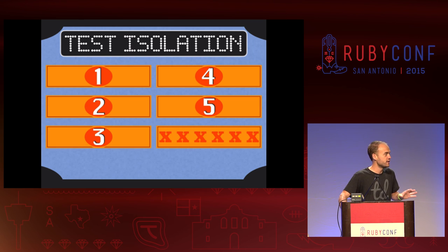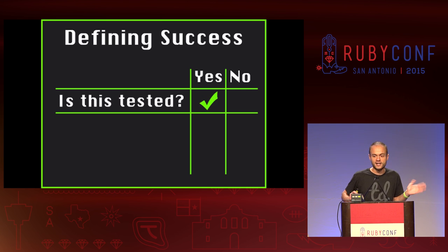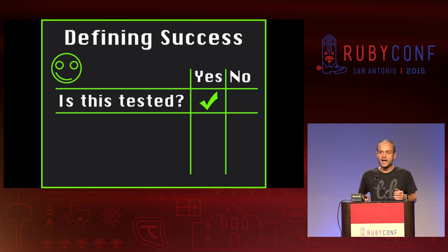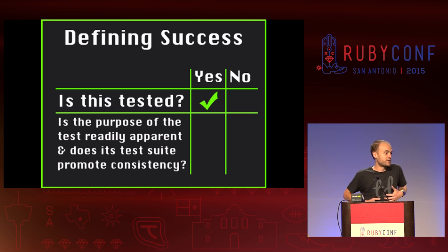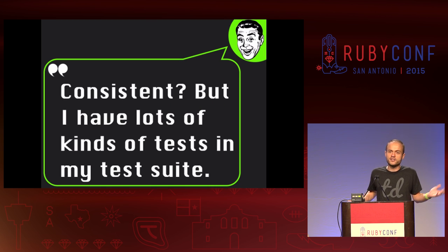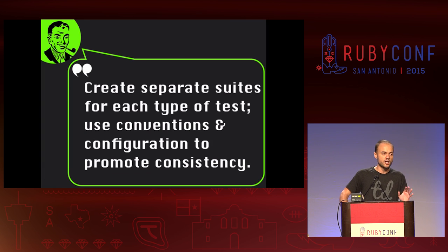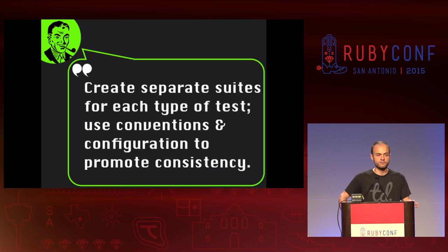The first thing I want to talk about that really cheeses me off is unfocused test suites. Most teams define success in Boolean terms when it comes to testing — they have one question: is it tested? I think we can dig deeper. My question is: is the purpose of each test readily apparent, and does its test suite promote consistency? Very few teams can answer yes. A lot of people say 'I've got tons of tests, all with different purposes,' and I say you could probably boil it down to four or five. For each type of test I define, I create a separate test suite, each with their own set of conventions, lovingly reinforced with their own spec helpers or test helpers to encourage consistency.